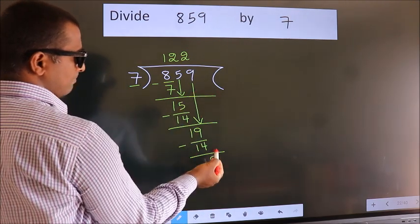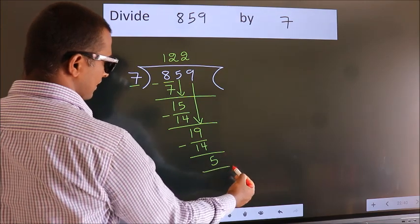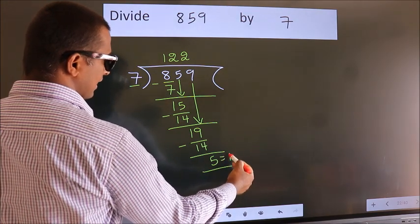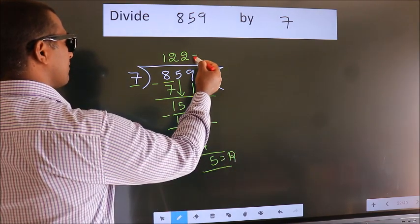No more numbers to bring down. So we stop here. This is our remainder. This is our quotient.